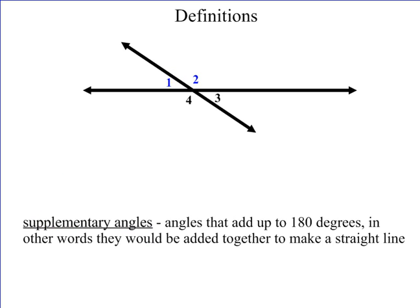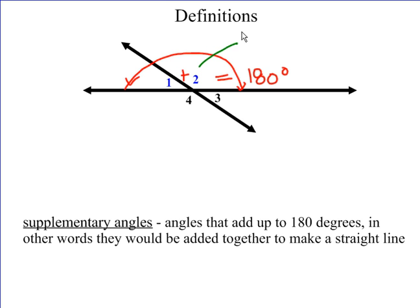Supplementary angles are angles that add up to 180 degrees — in other words, they are added together to make a straight line. Since the transversal cuts across, if I add angles one and two together, they equal 180 degrees. For example, if angle two measured 120 degrees, that tells me angle one measures 60 degrees, because 60 plus 120 gives 180.